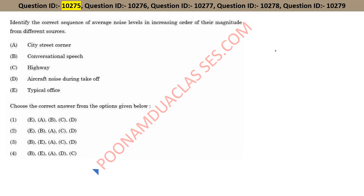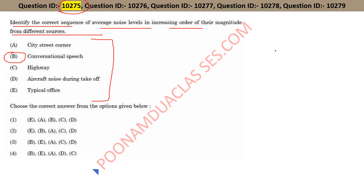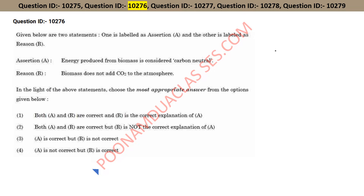The first question, question ID 10275: identify the correct sequence of average noise level in increasing order of magnitude from different sources. First, let's consider conversation speech, and you can also see what the highest noise is — aircraft noise is highest during takeoff. So option number three is the right answer.